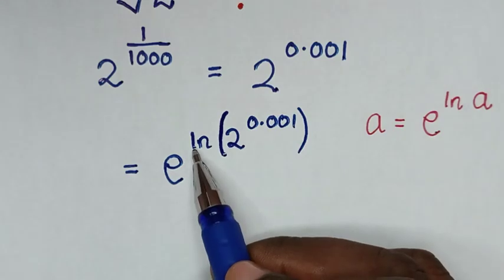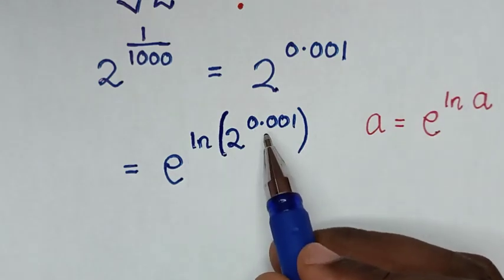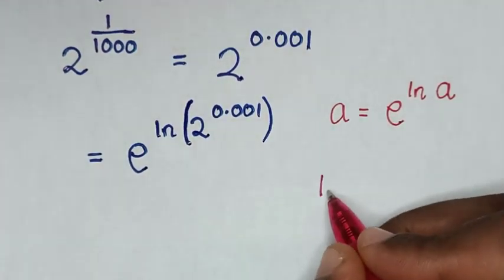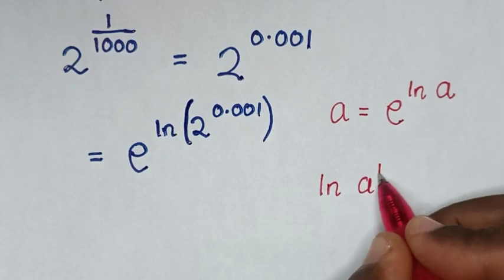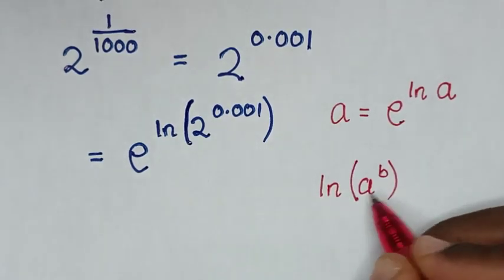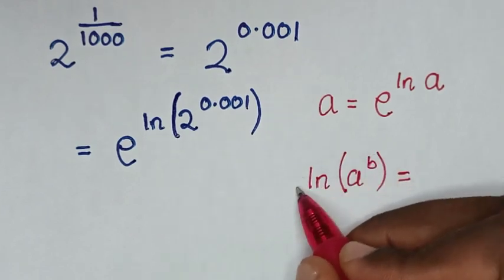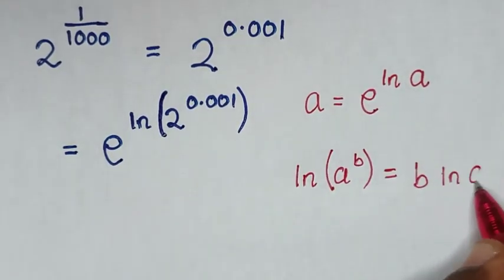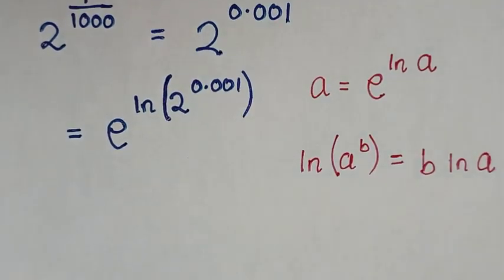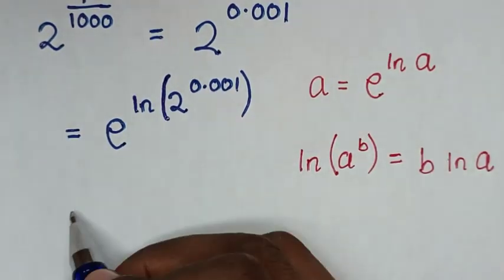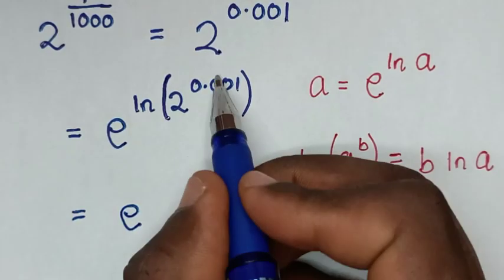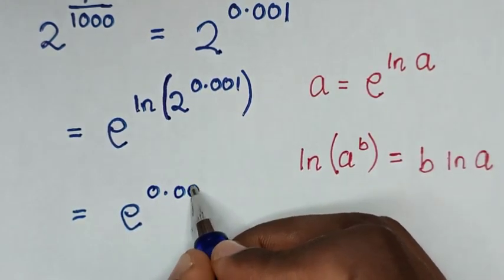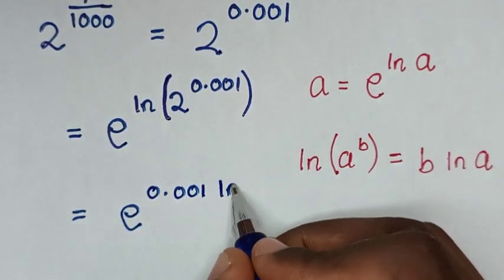From here, the power in ln of 2 to the power of 0.001 is in the form of ln(a^b). The bracket is equal to b·ln(a), meaning the power b moves to the base. So it will be equal to e to the power of 0.001 times ln 2.